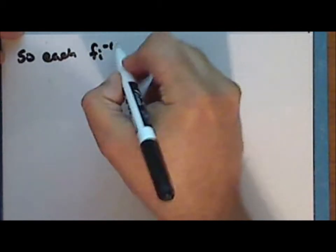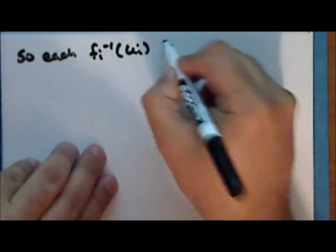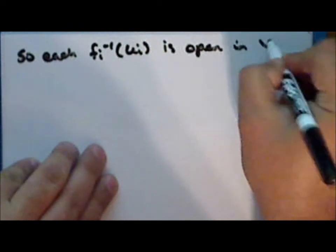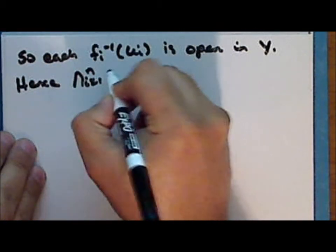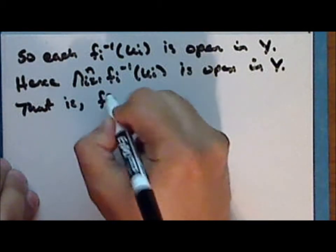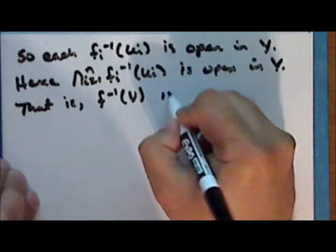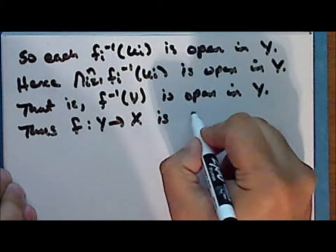So each of the inverse images under the map f sub i of the set U sub i is open in the space Y. Hence the finite intersection of these open sets is open in the space Y; that is, the inverse image of the set V under the map f is open in the space Y, and thus the function f mapping Y into the product space X is continuous.